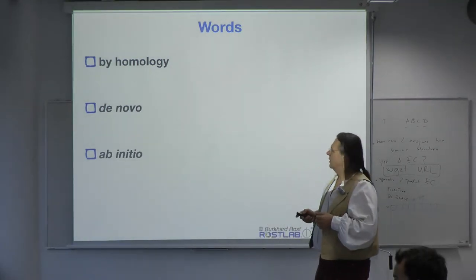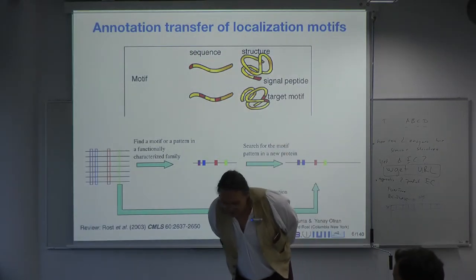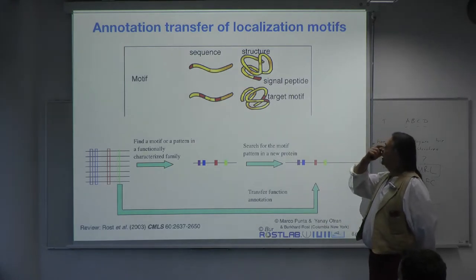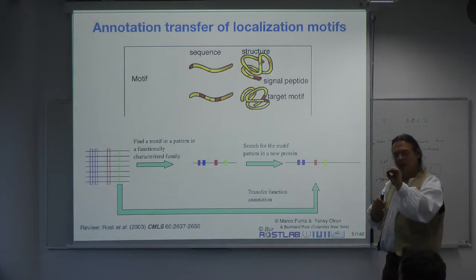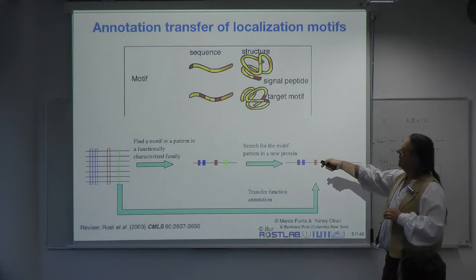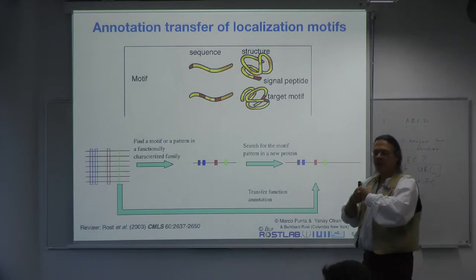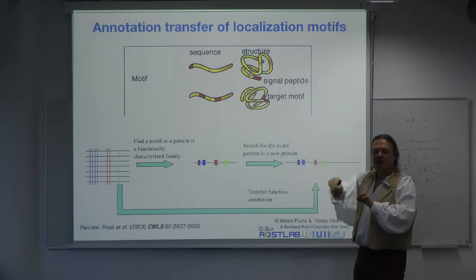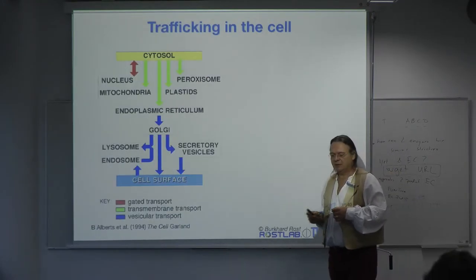Sub-cellular localization can be predicted by motifs. There are two different types: sequential motifs, where you look at a stretch of consecutive residues and recognize the motif — signal peptides fall into this context — and conformational motifs, where you only recognize the motif when the protein is folded in 3D. On the level of sequence you just have isolated stretches that together don't form a motif. There is a particular hierarchy in the pathway of biological sorting mechanisms.